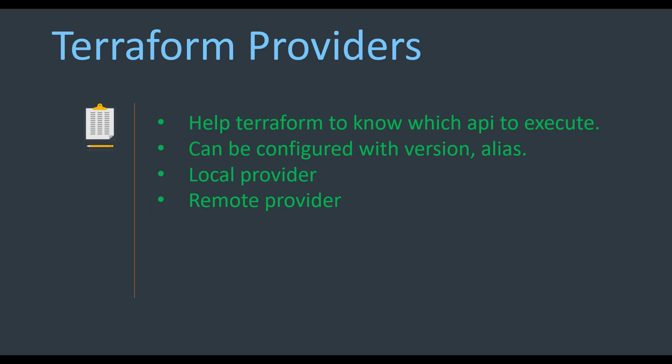There are two different types of providers in Terraform or HashiCorp. The remote provider is the provider for the remote cloud which you are targeting to provision your infrastructure, such as Google, AWS, or Azure. We also have some local providers provisioned by HashiCorp only, for example to generate a random string, password, or time values.